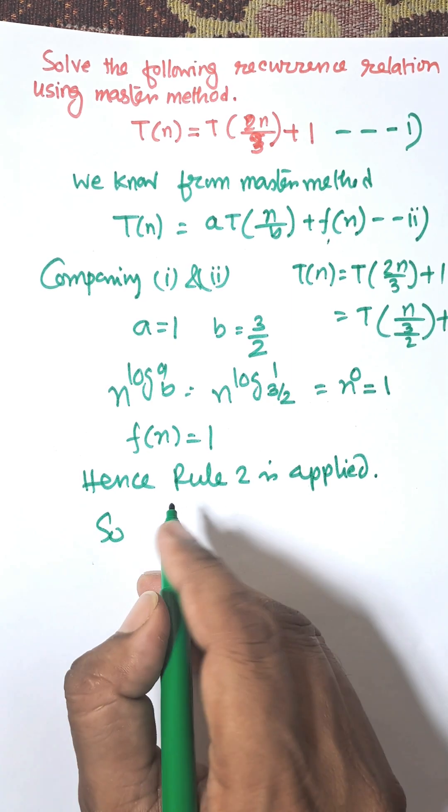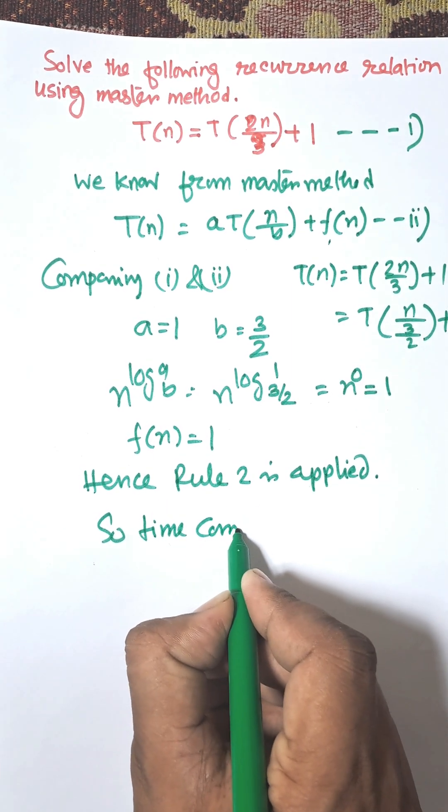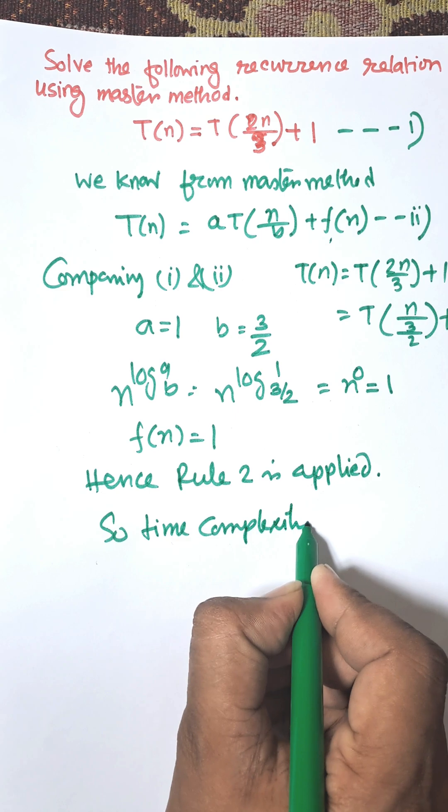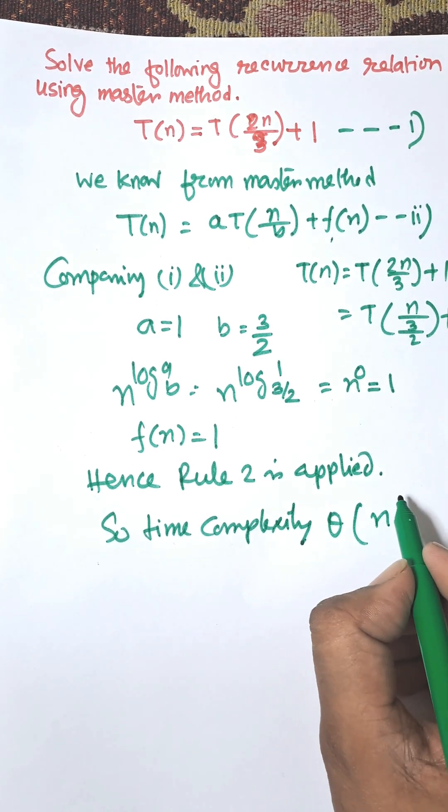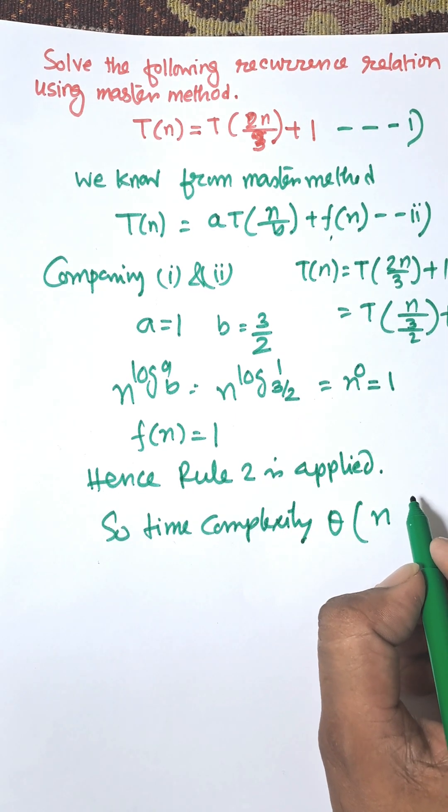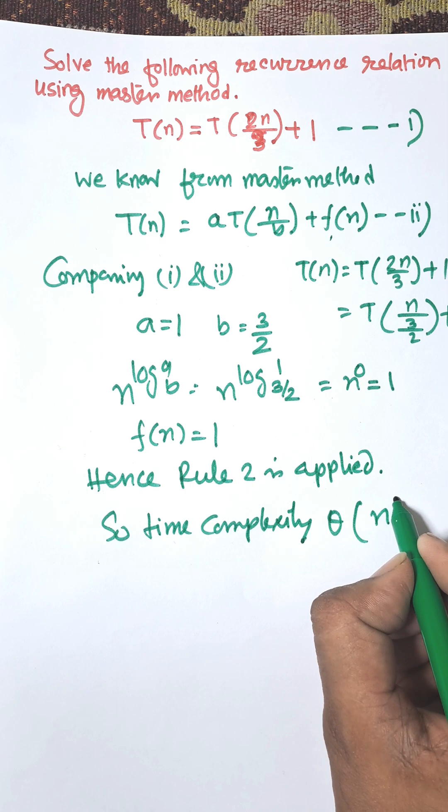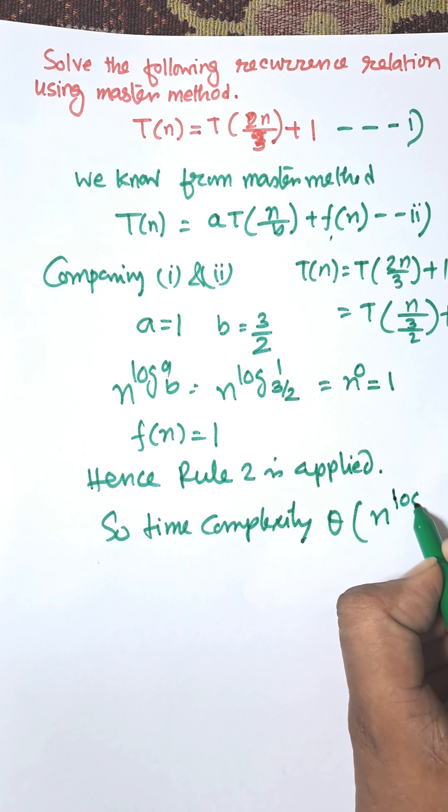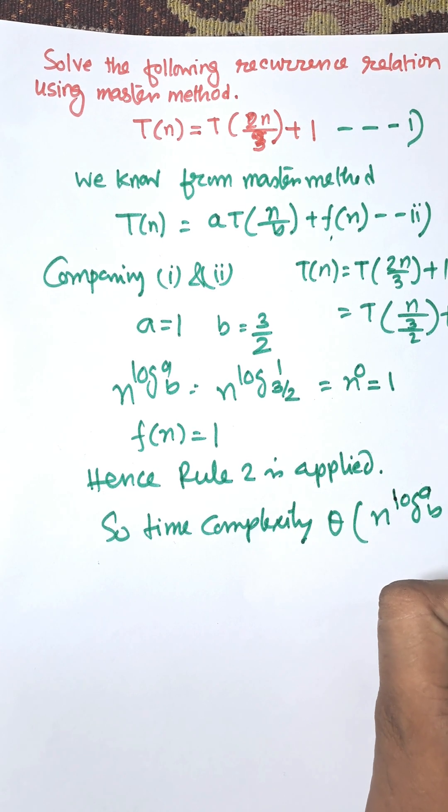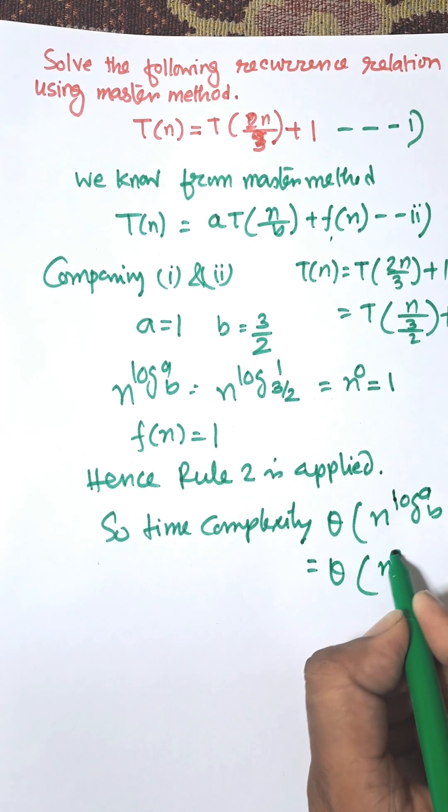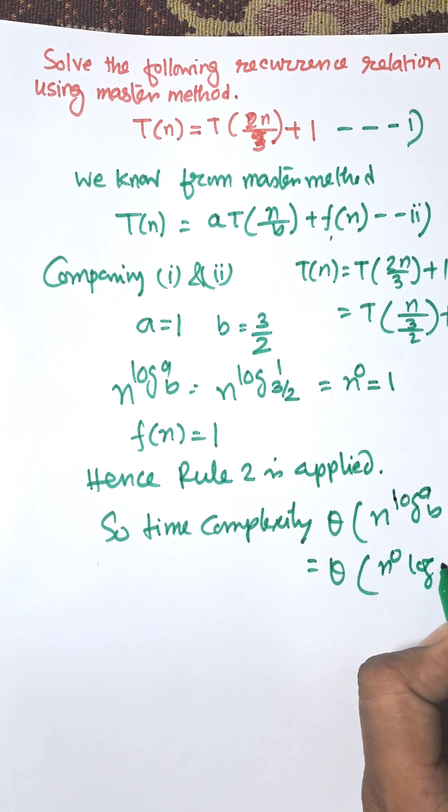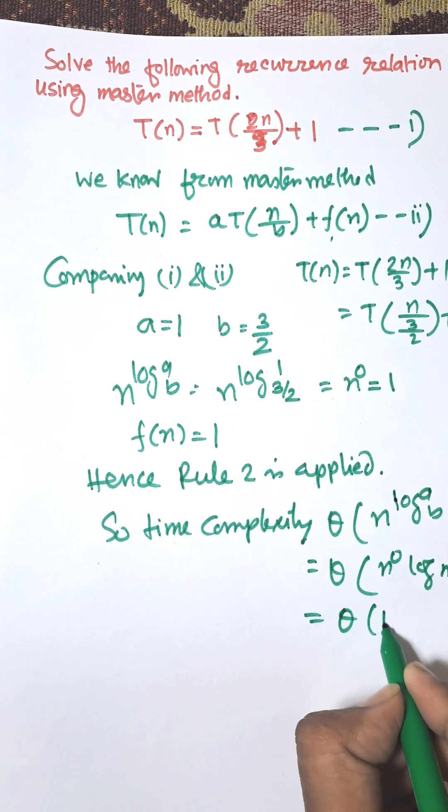So time complexity theta(n^(log_b a) log n) equals theta(n^0 log n), that is theta(n^0 log n). That means theta(log n).